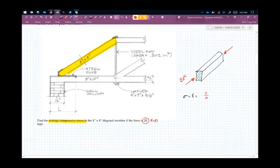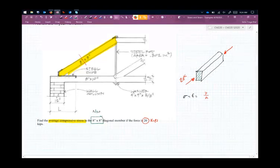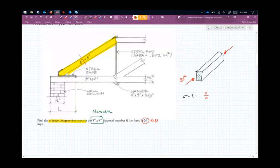If you look at an eight by eight, this is nominally eight by eight. Just like a two by four isn't really two inches by four inches, an eight by eight isn't really eight inches by eight inches. So the actual stress we need to calculate is based on the actual size. The actual dimension of an eight by eight is actually... what do you think?